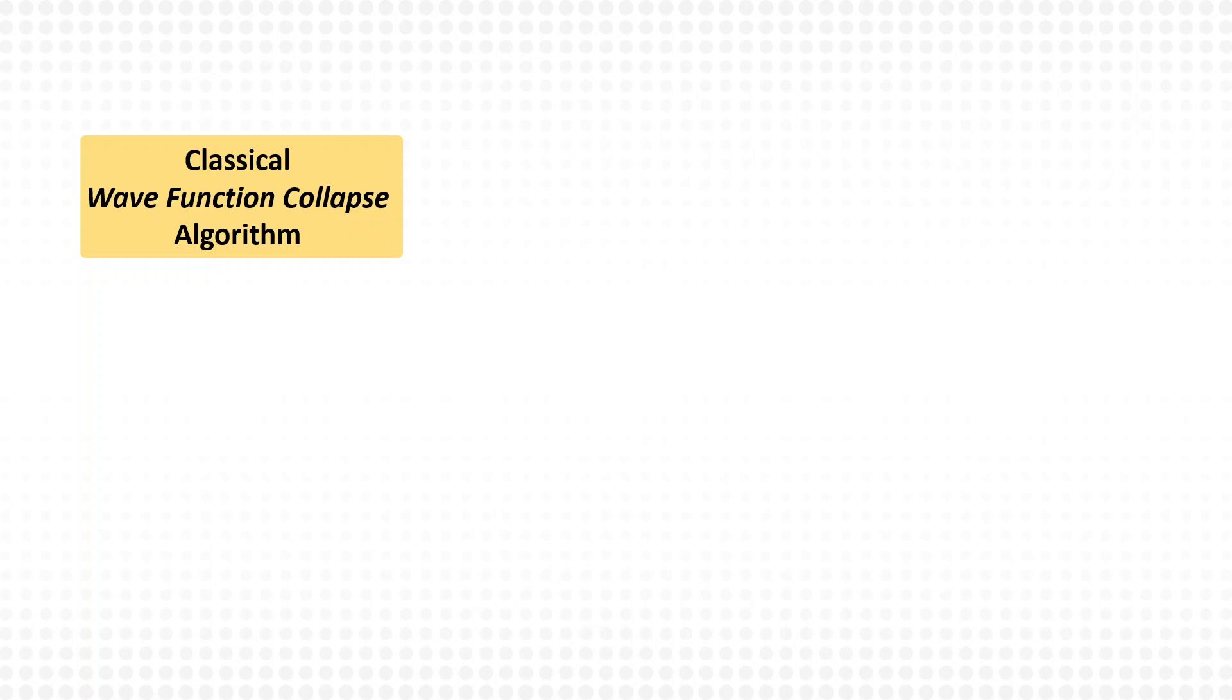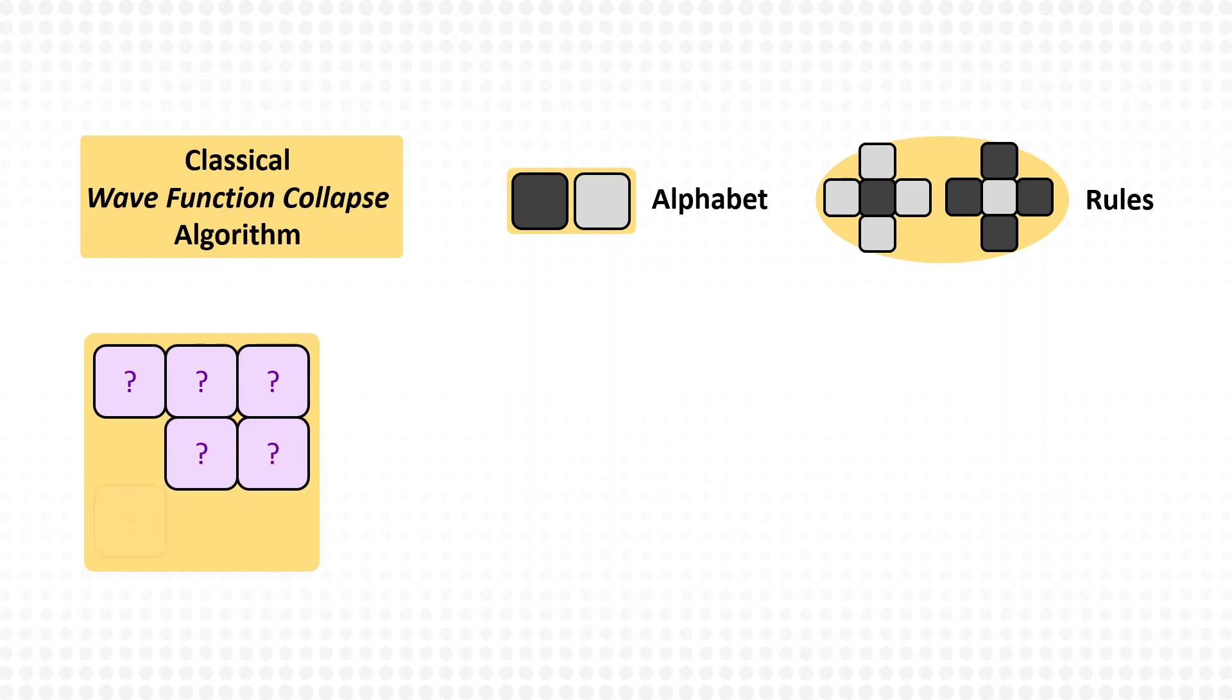To explain the algorithm, we can consider a very simple example: the generation of a checkerboard image consisting of dark and bright tiles with simple next-neighbor rules. The algorithm starts with all tiles being undefined. Then, the information entropy of each tile is calculated.